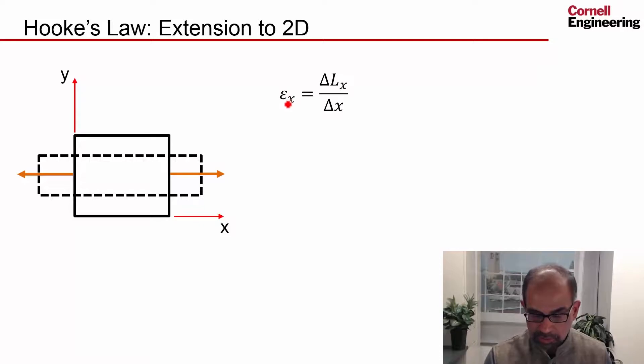So I have a normal strain in the X direction that's given by this change in length. So if this change in length is delta L_X and this dimension is delta X, then the change divided by the original dimension gives me the strain in the X direction.